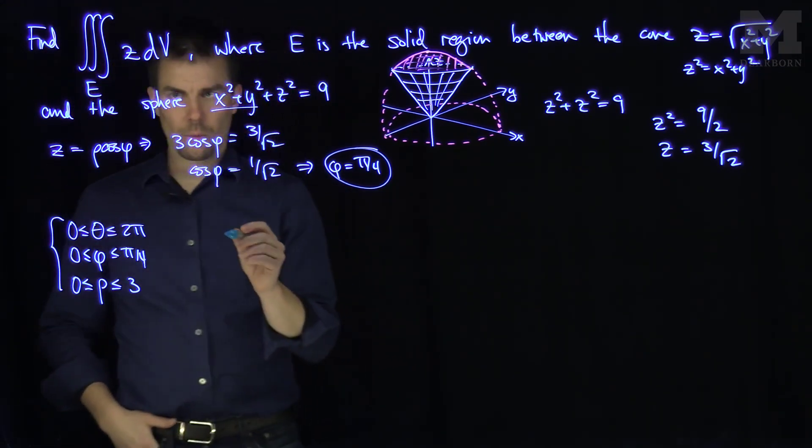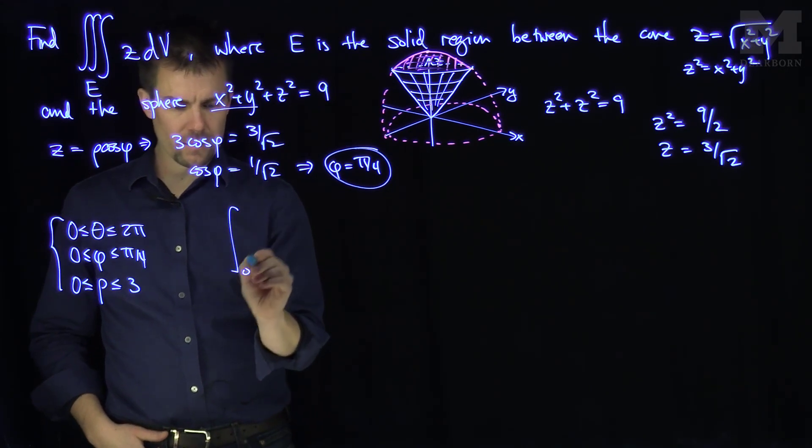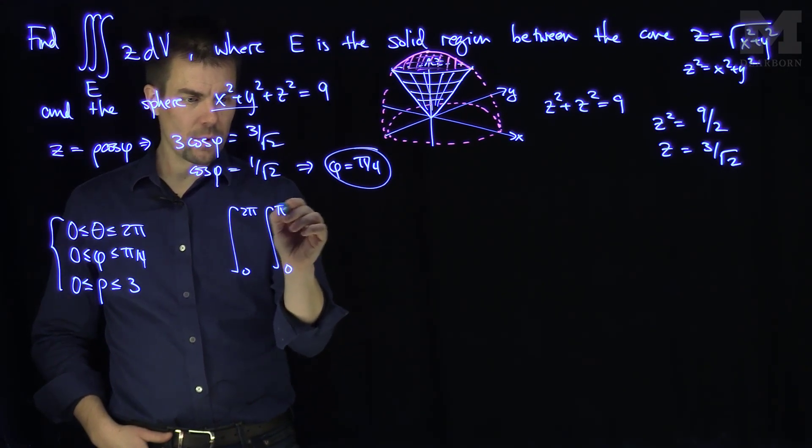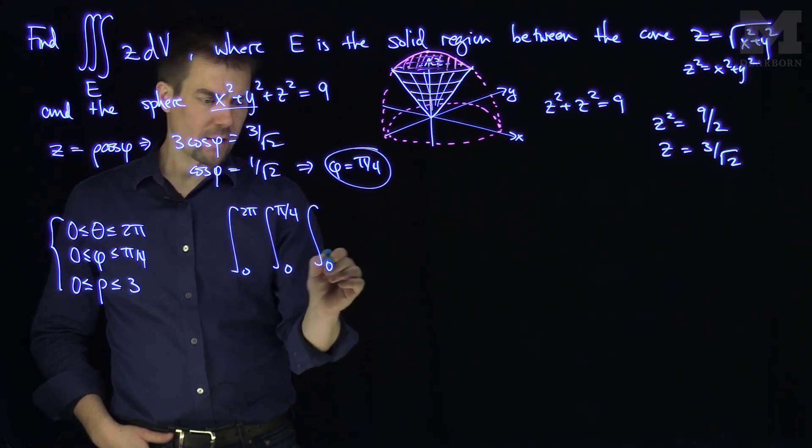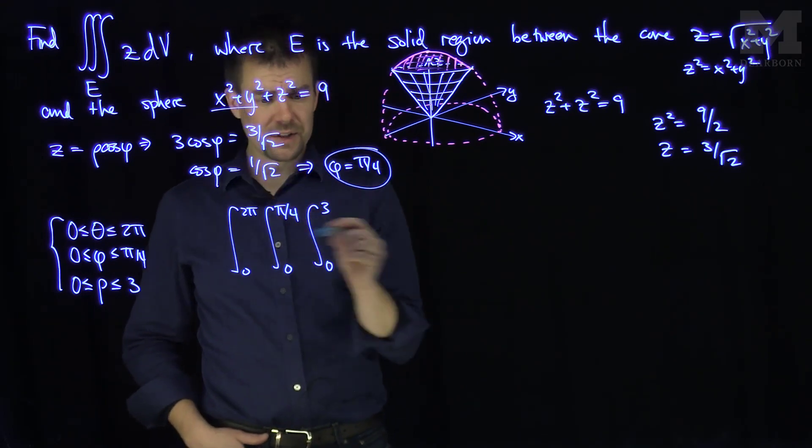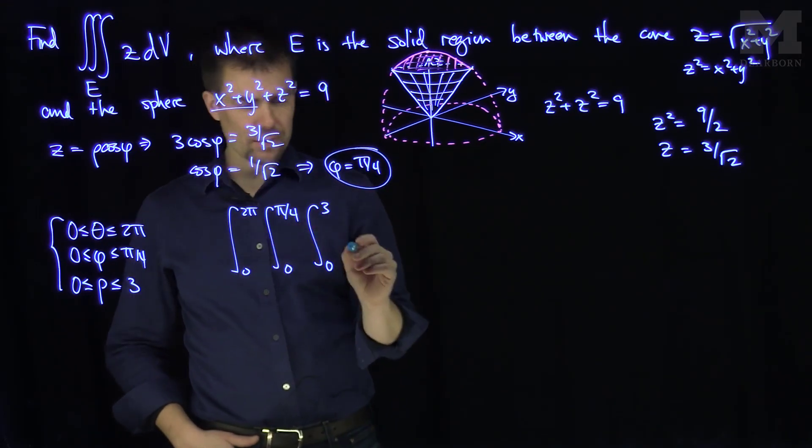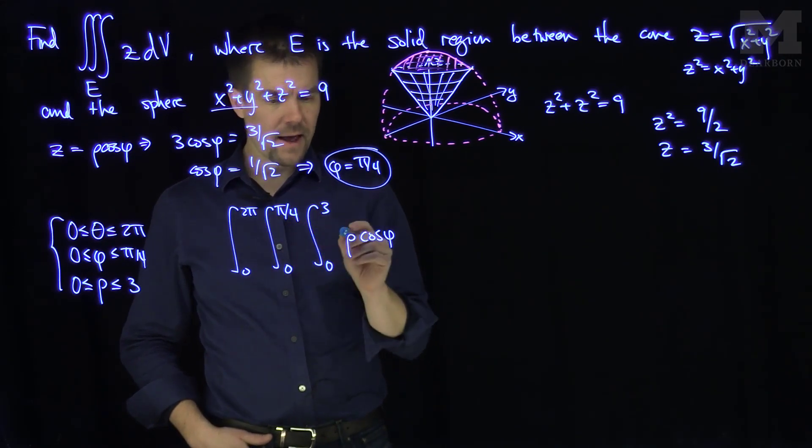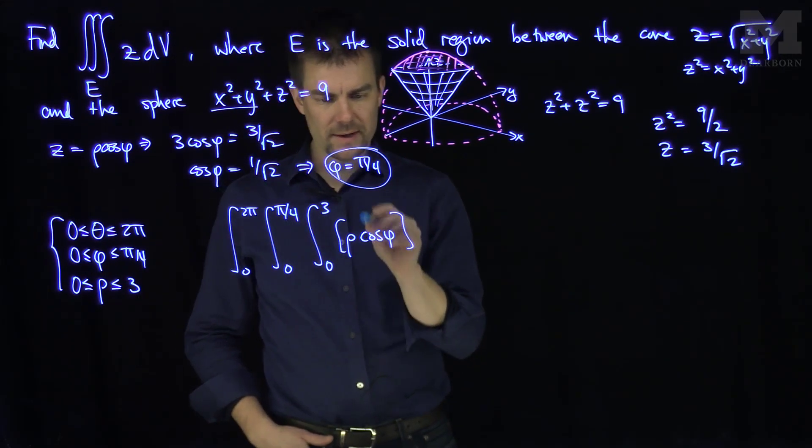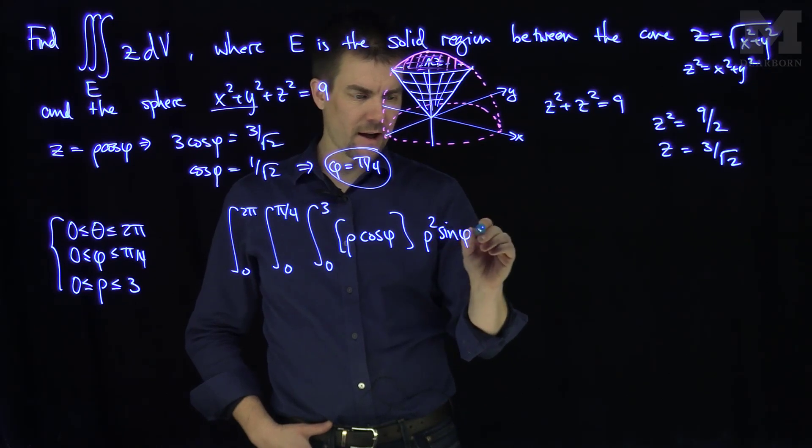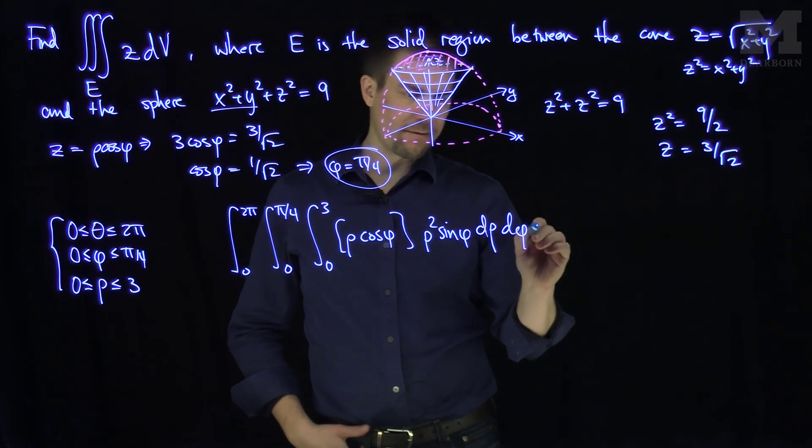So now we change to spherical coordinates. So my integral becomes the integral from 0 to 2 pi. The integral from 0 to pi over 4. And then the integral from 0 up to 3 of z. In spherical coordinates, we know that z is rho cosine phi. So rho cosine phi. And then we have the Jacobian, so that's my z. And then the Jacobian term is going to be rho squared sine phi. Then I do a d rho, d phi, d theta.